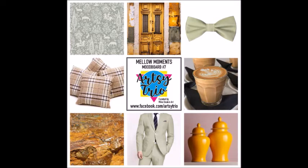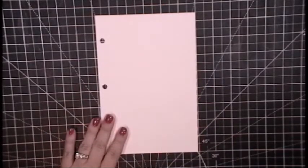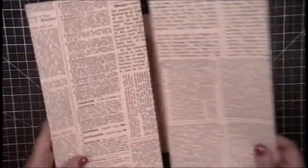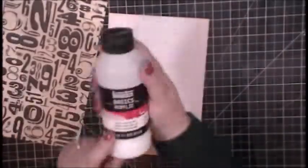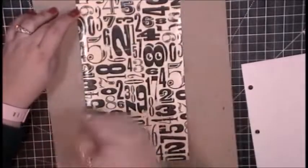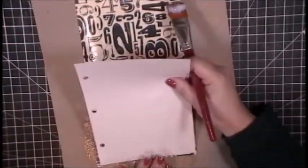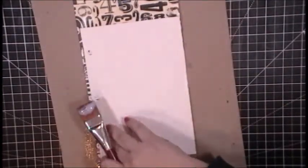I am working from the mood board for the Artsy Trio Facebook group, and I'm particularly drawn to the color palette. I am starting on this piece of mixed media paper that is about five and a half by eight and a half inches, and my plan is to cover both the front and the back with this piece of text scrapbook paper. It was 12 by 12 inches, and I've cut it down to 6 by 12, and I will adhere both the front and back of this mixed media page to the text paper with a liquid medium.